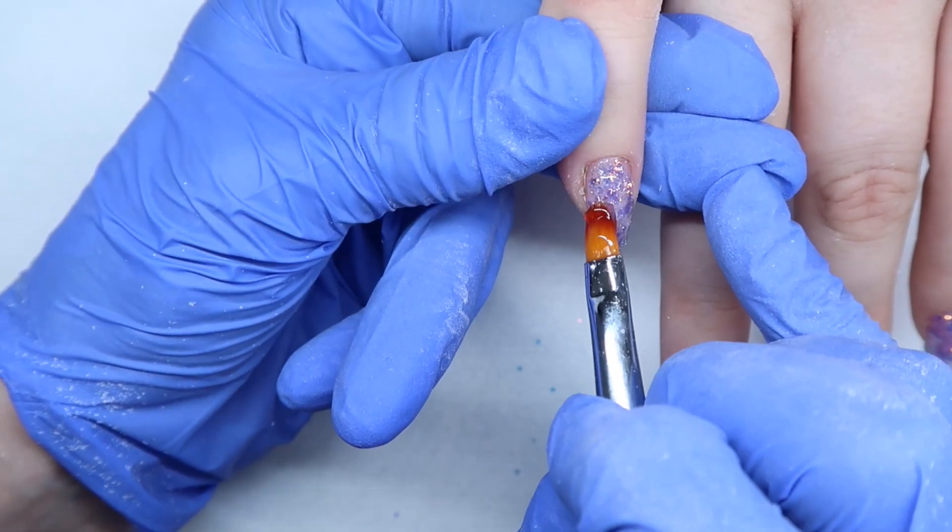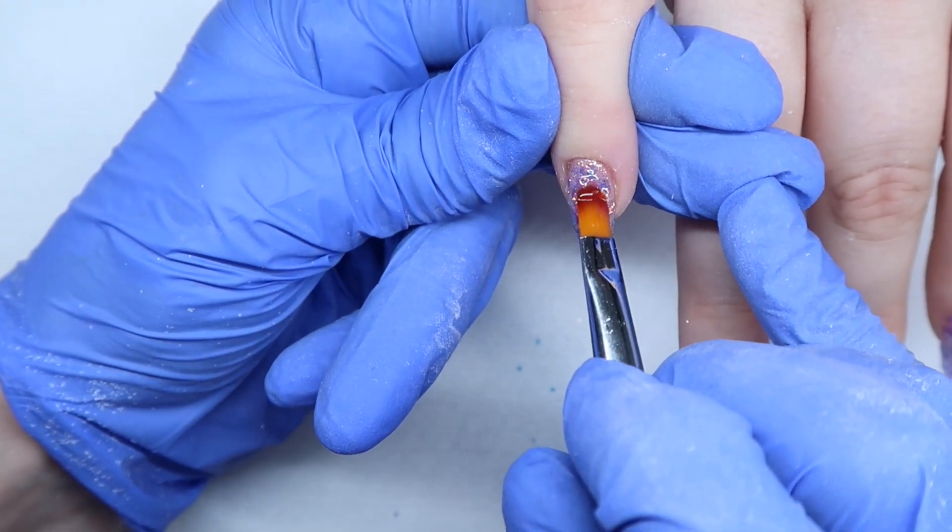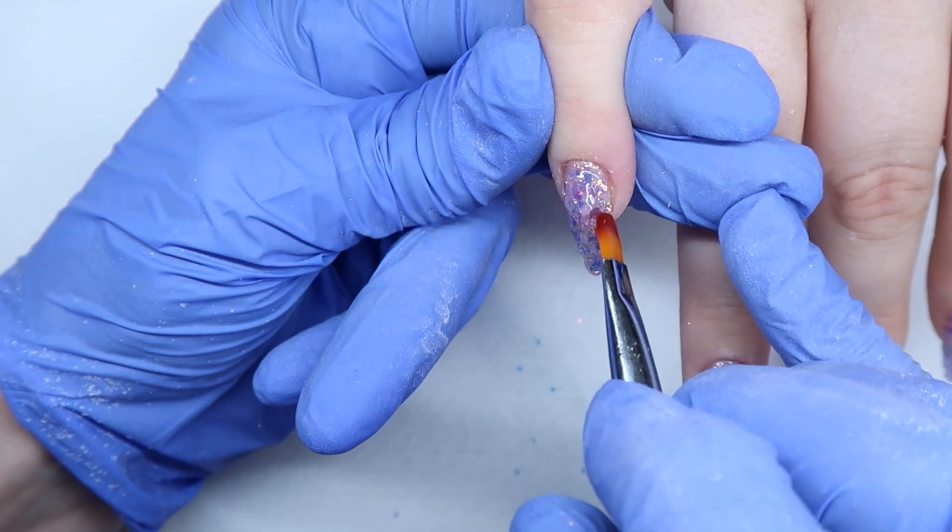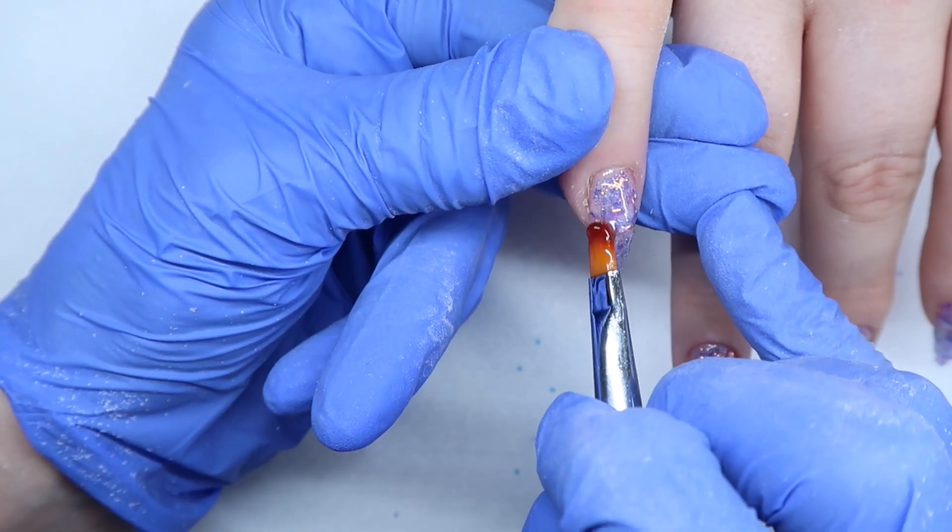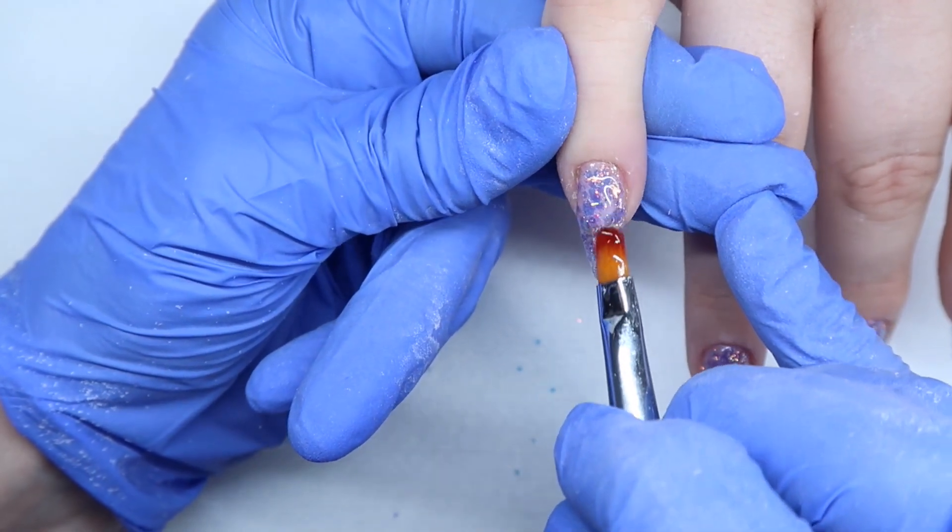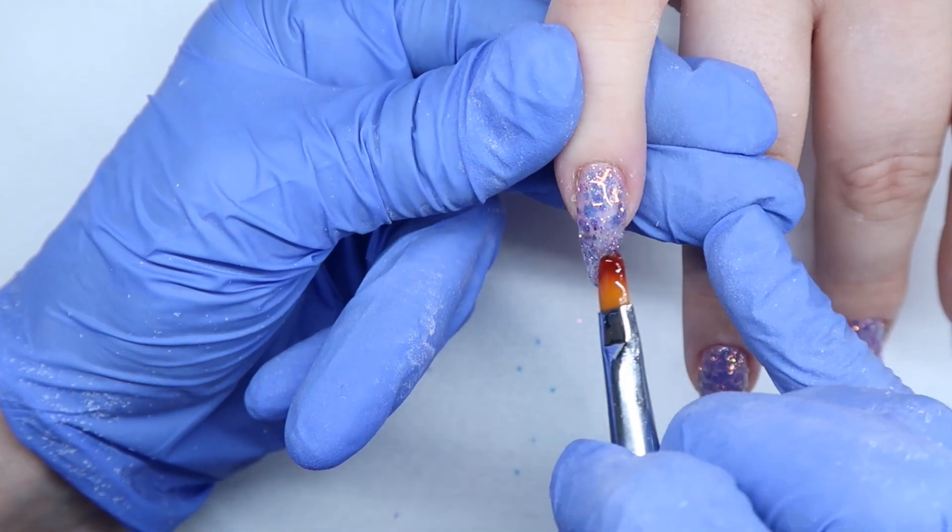So here I'm coming in with my bigger bead, placing it near the cuticle area. And then I'm going from the right to the left and sort of dragging it down the nail. While keeping the bulk in the center of the nail to create my apex, but still cover up all this glitter.